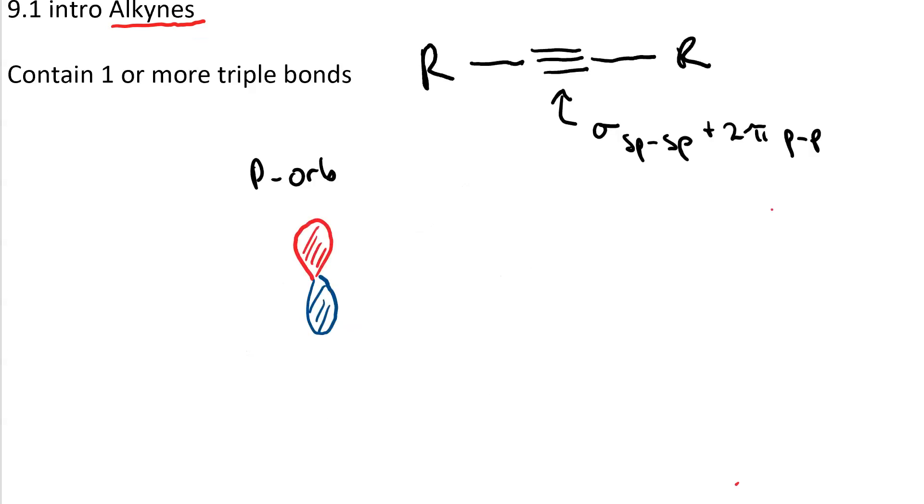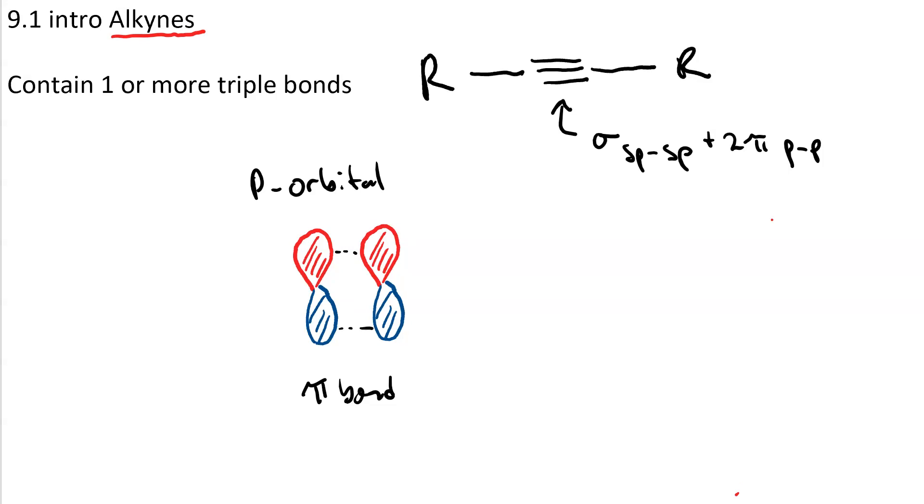Just for a quick review, a p orbital has two lobes, one above the nucleus with positive phase and one below the nucleus with negative phase. A pi bond occurs when you have side-on overlap in phase of two p orbitals.